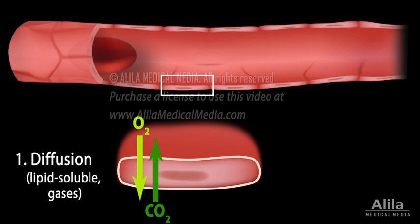Glucose and other small water-soluble molecules move, in part, by facilitated diffusion. They use special channels, called transporters, to cross the cell membrane.